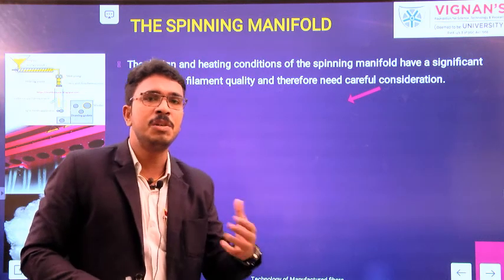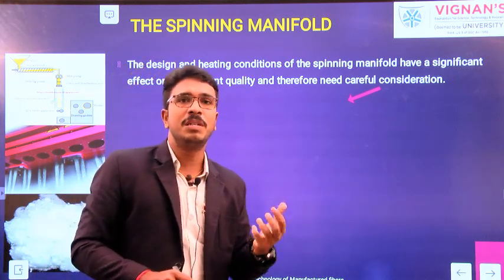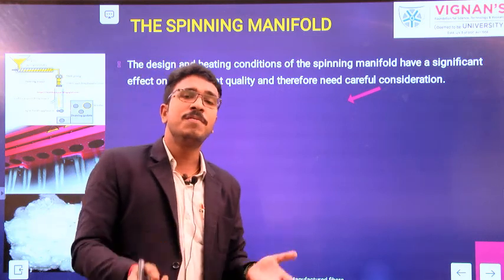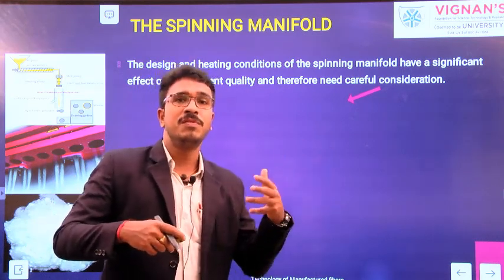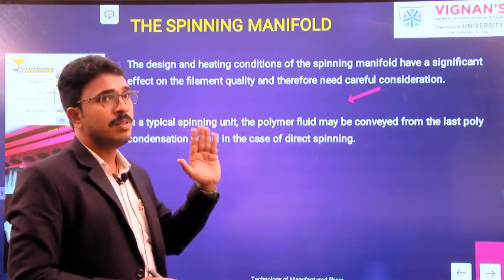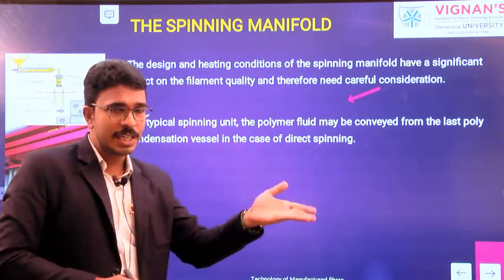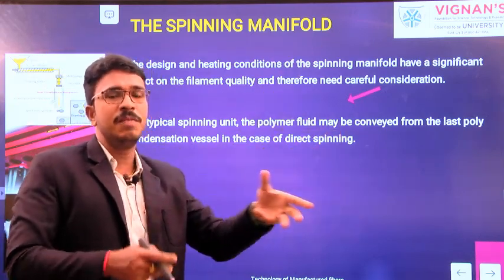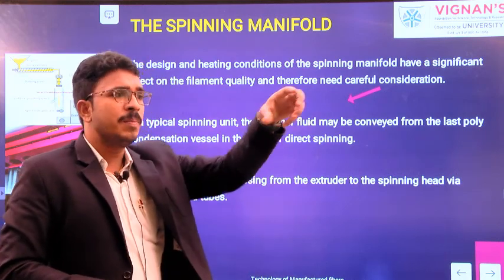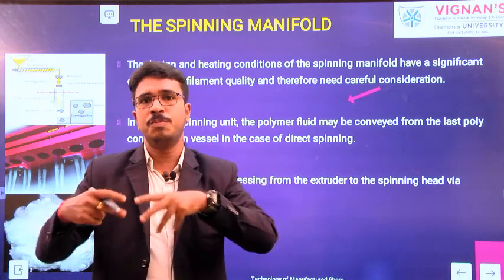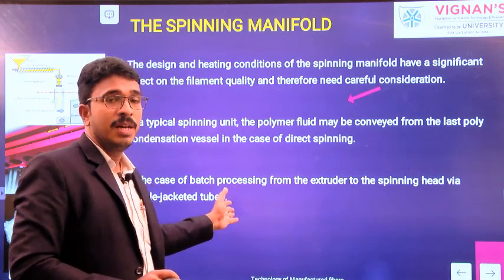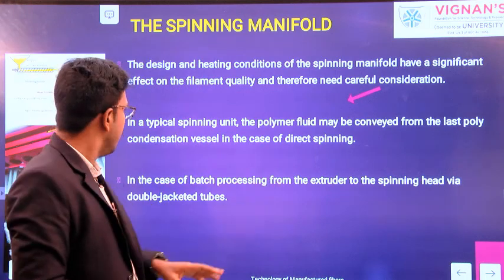The design and heating conditions of the manifold are very important. If the manifold is unable to maintain the temperature of the molten polymer — if the temperature drops — some part of the polymer may convert to solid state. If over-temperature is there, it will give some kind of changes in polymer properties. In a typical spinning unit, the polymer fluid may be conveyed from the last polycondensation vessel in case of direct spinning. In case of batch processing, it goes through extruder and then manifold, where the tubes are heated by circulation of Dowtherm, which is a heating medium.